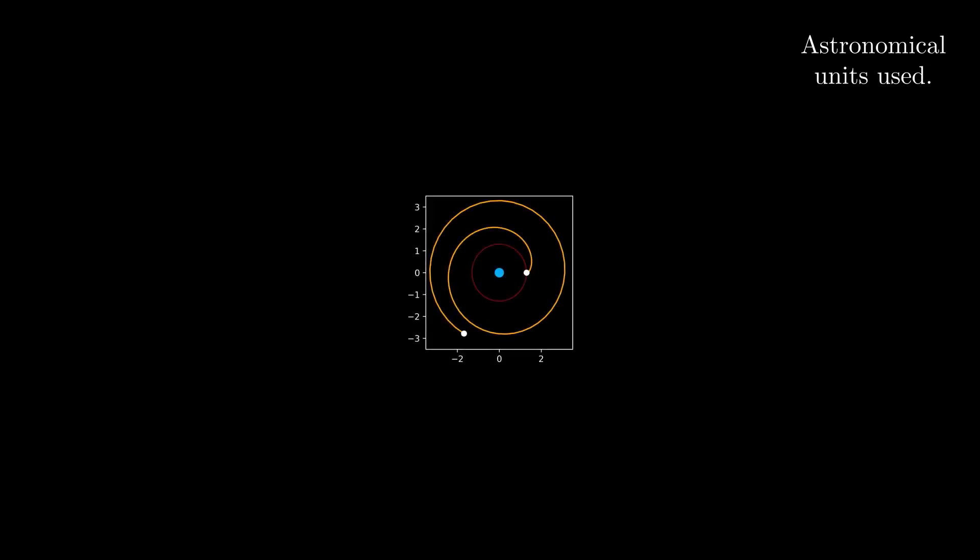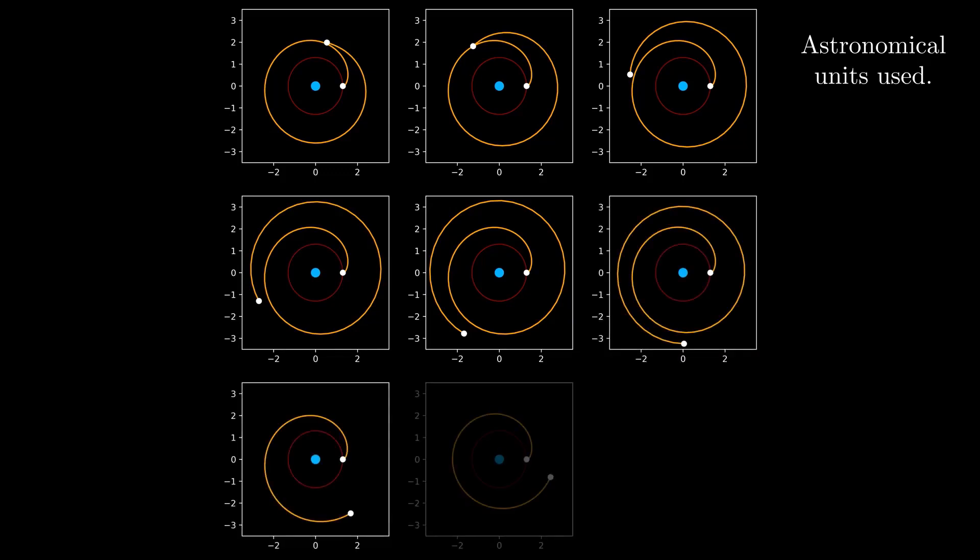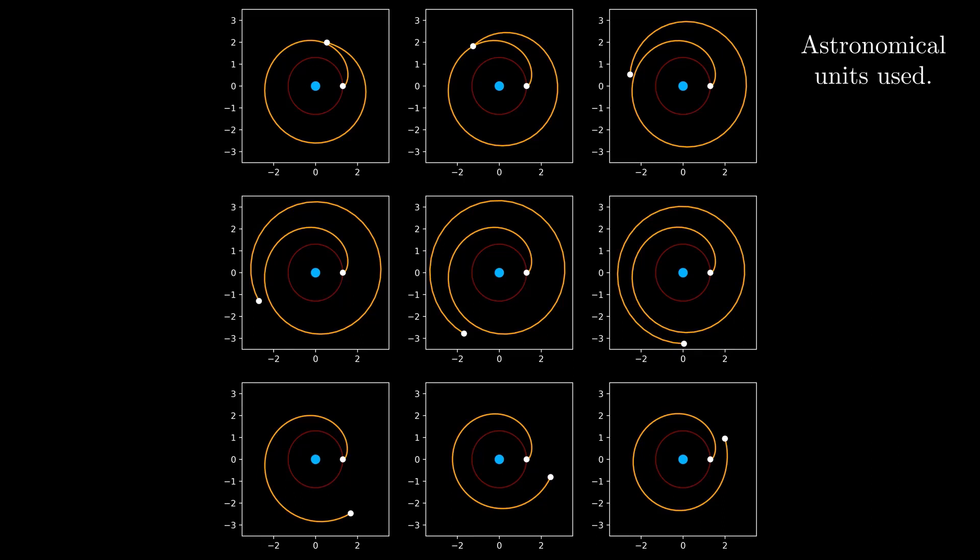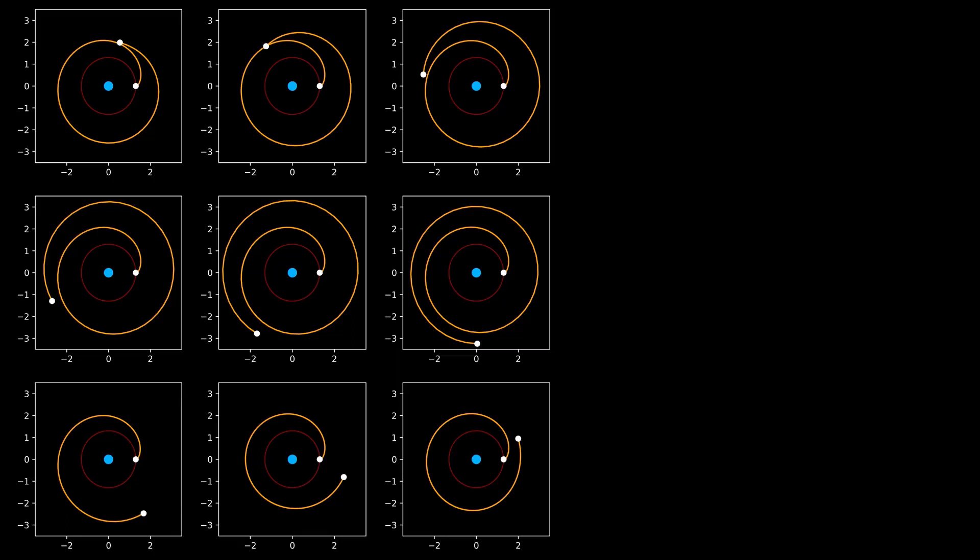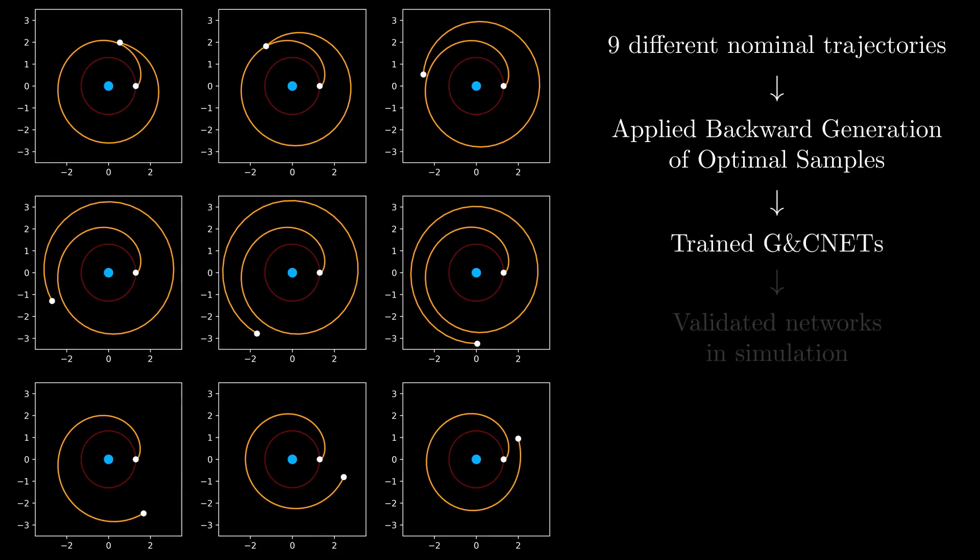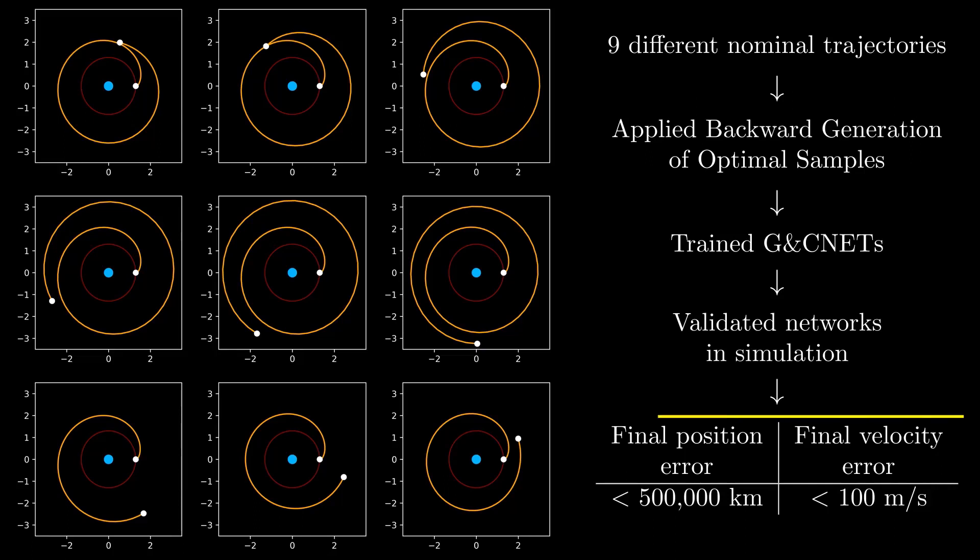To confirm quantitatively the reliability and accuracy of this methodology, we took nine different nominal trajectories which only differ in initial eccentric anomaly. Hence, all of them have a different phasing to the final target. We then applied the Backward Generation of Optimal Samples to each of these nominal trajectories, trained the corresponding G&CNets to represent the optimal control policy, and validated these in simulation. In all cases, we found residuals under 500,000 km in final position error and 100 m/s in final velocity error. These are compatible with mission requirements and show that the G&CNets are able to cancel out, rather than accumulate, the prediction errors possibly made during the transfers, which for these interplanetary missions last up to five years.